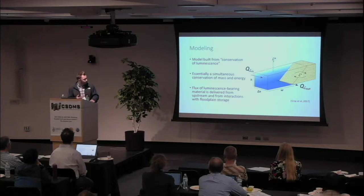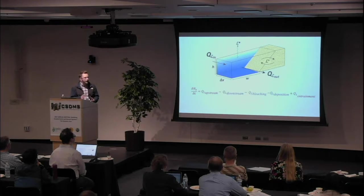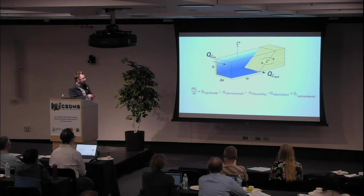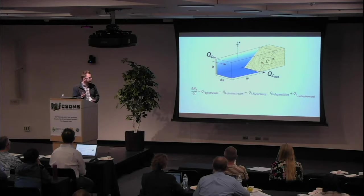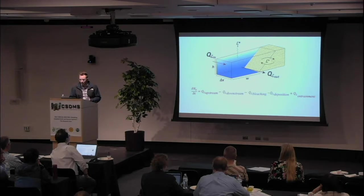To go about doing this, I performed a simultaneous conservation of energy and mass to develop a model. Basically how I constructed it was having our same idealized river channel and a storage center. What I've done is said, okay, if we're going to look at a handful of sand in the channel, there's going to be a flux from upstream bearing some luminescence, a flux downstream taking the luminescence out of our location, luminescence is going to change a little bit due to sunlight exposure, and then there's going to be mixing going on as sediment is either deposited or entrained by the flow.